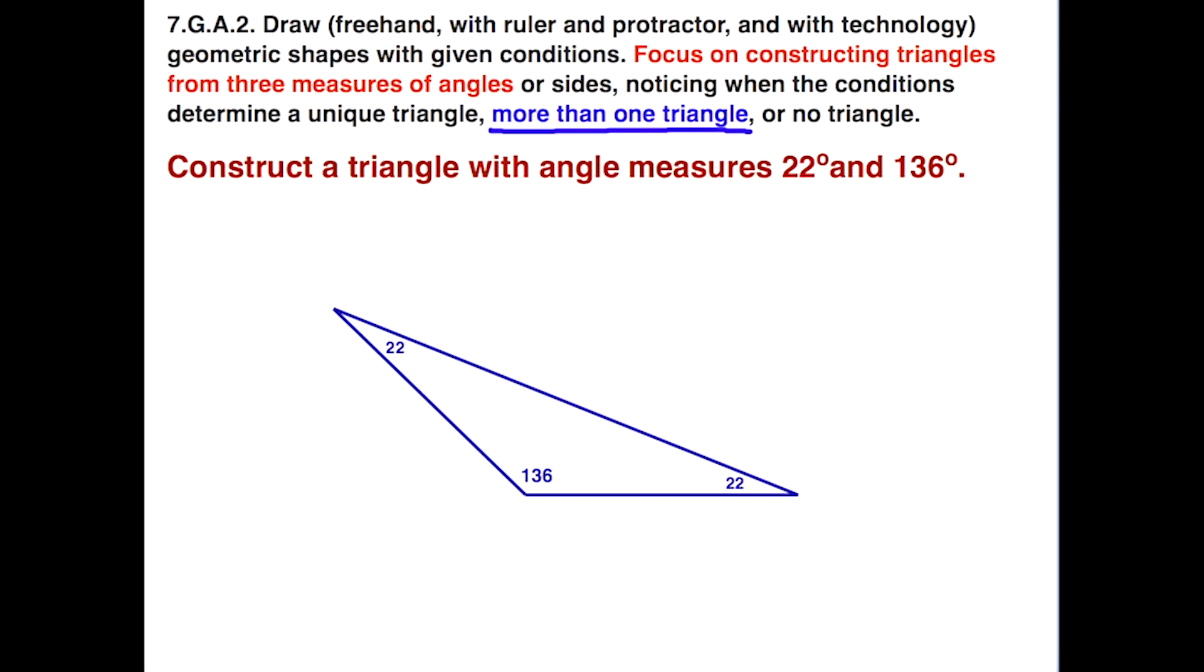And again, since students didn't have any specific lengths for the sides, they will end up making more than one triangle out of it. They're going to have similar triangles. So again, you know, this might be an example of what they come up with, but they're all going to look exactly alike, even though the lengths of the sides might be different sizes.